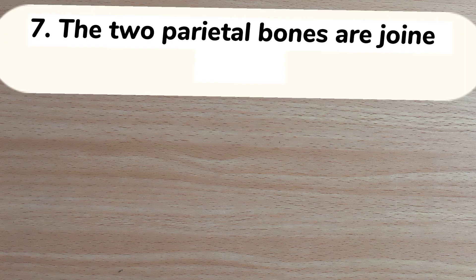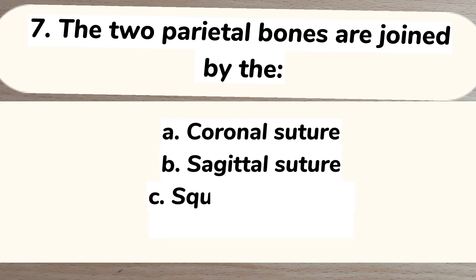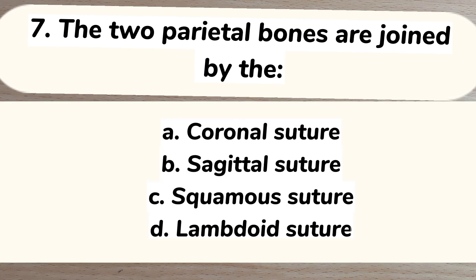Number 7. The two parietal bones are joined by: A. Coronal suture, B. Sagittal suture, C. Squamous suture, D. Lambdoid suture. Answer: B. Sagittal suture.